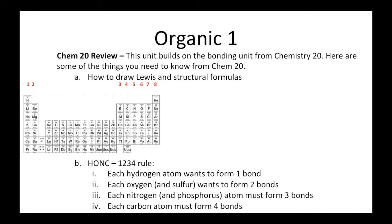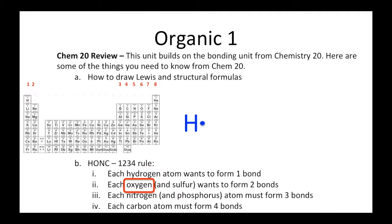On a periodic table, we have periods that go this way and groups that go this way. If we just deal with the top three periods — called the short periods — we number those groups one through eight. Hydrogen happens to be in group number one, and when it's in group one, that tells us it has one electron in its outer level. So if I draw a Lewis diagram, I'd put an H with one dot.